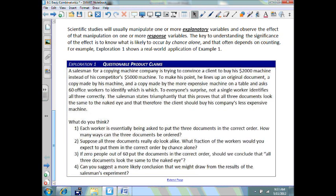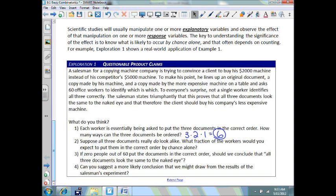What do you think? Each worker is essentially being asked to put the three documents in the correct order. How many ways can the three documents be ordered? There's three ways to put the first document, two ways for the second times one, so that means six different ways. Suppose all three documents really do look alike. What fraction of the workers would you expect to put them in the correct order by chance alone? There's going to be one out of six. One out of six, by chance alone, would put them in the correct order, because the correct order is one of those ways.